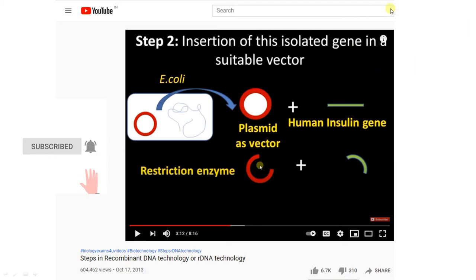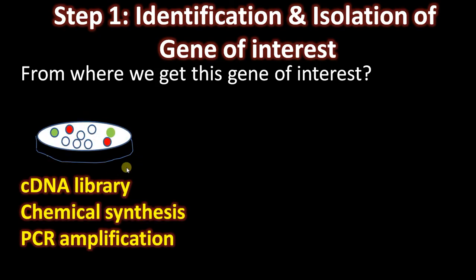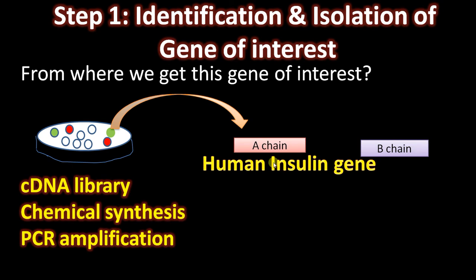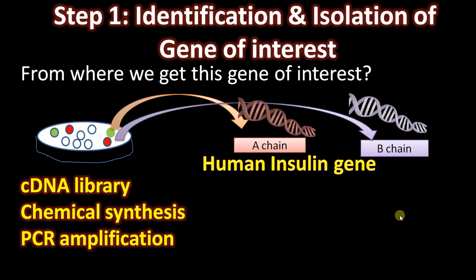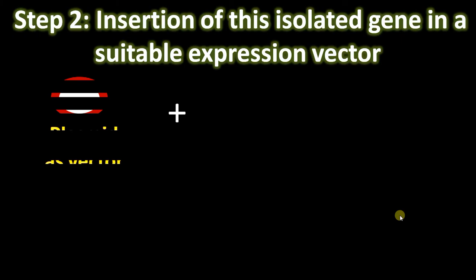Step one: identification and isolation of the gene of interest. We can obtain this gene from a cDNA library, by chemical synthesis, or by PCR amplification. A cDNA library is widely used as it is devoid of introns, so the gene will be directly expressed inside a bacterial cell which lacks an intron removal mechanism. The most common method adopted for insulin production is chemical synthesis of the A gene and B gene, since insulin is made up of two chains.